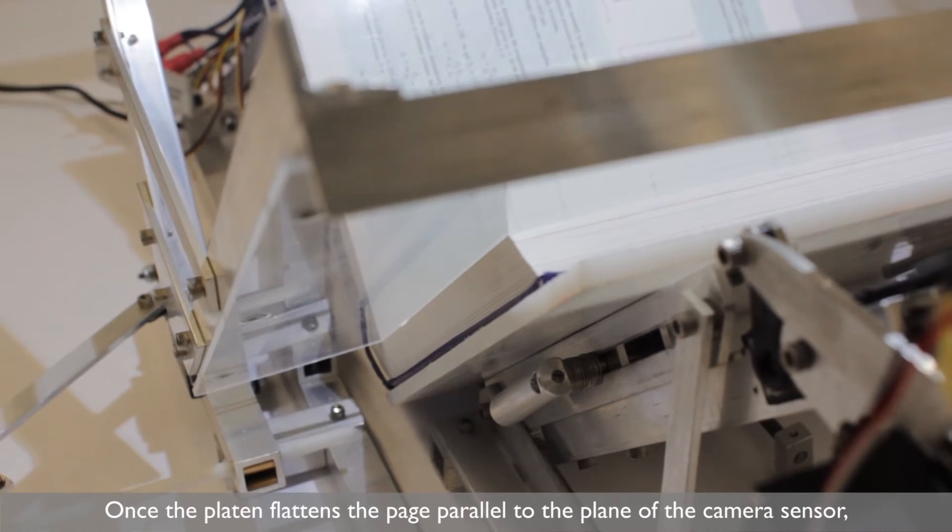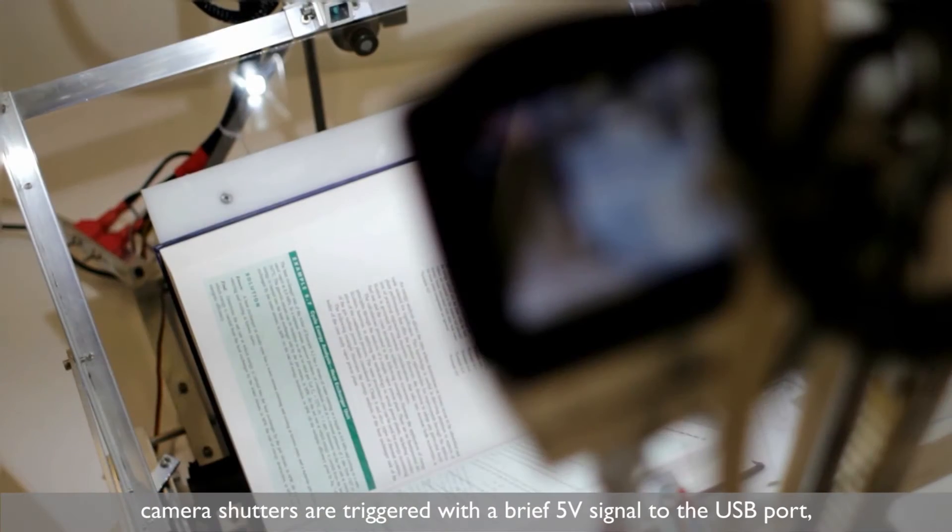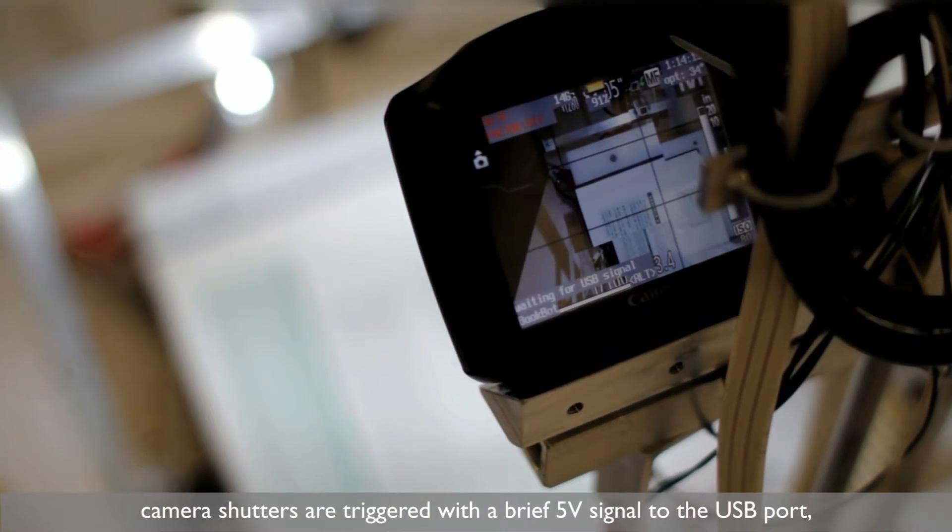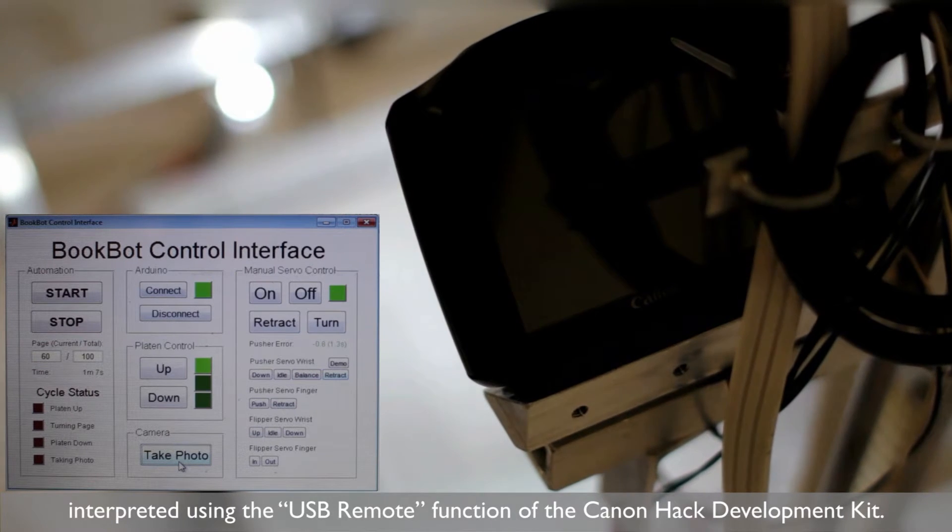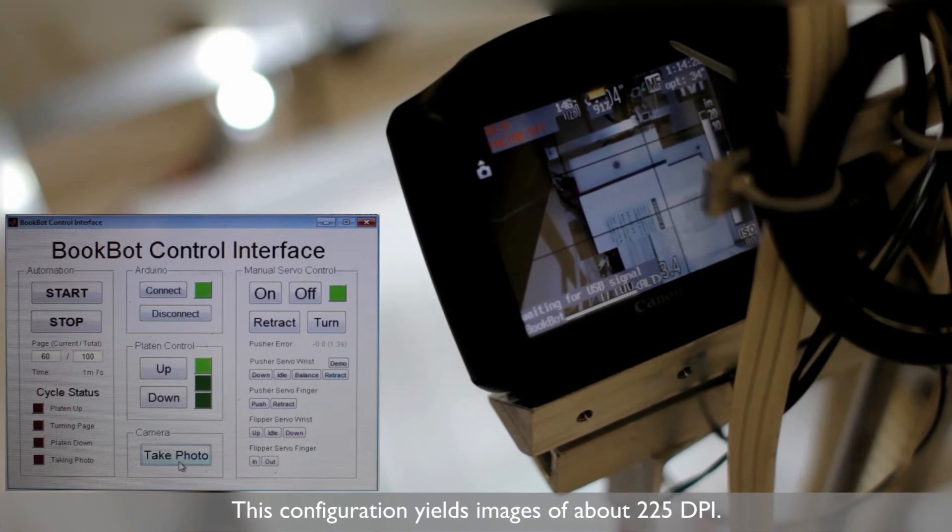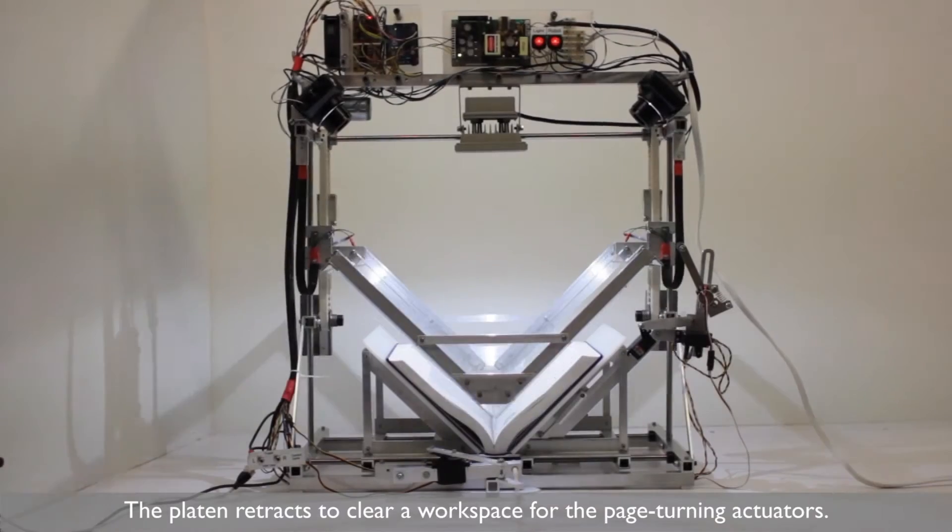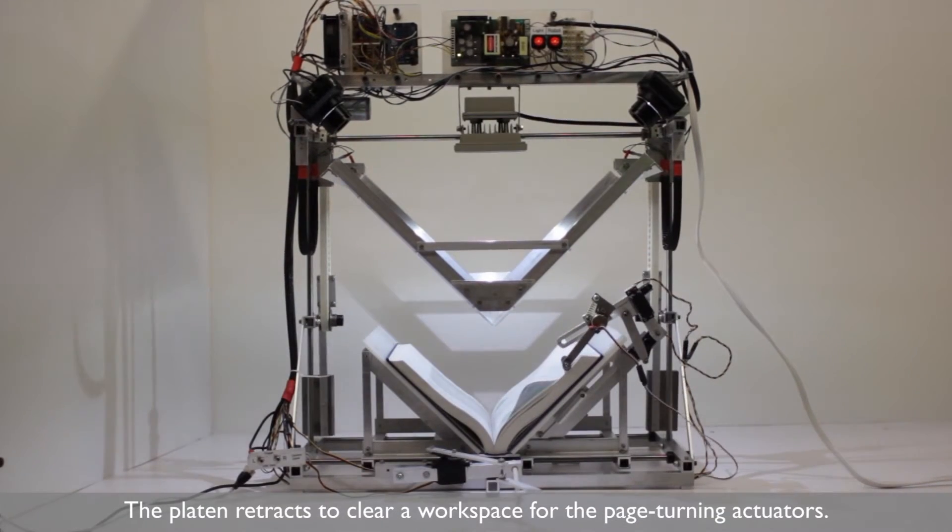Once the platen flattens the page parallel to the plane of the camera sensor, camera shutters are triggered with a brief 5-volt signal to the USB port, interpreted using the USB remote function of the Canon Hack Development Kit. This configuration yields images of about 225 dots per inch. The platen retracts to clear a workspace for the page turning actuators.